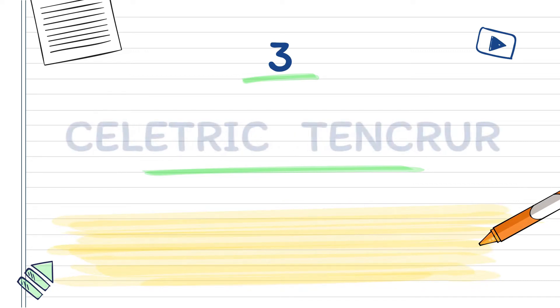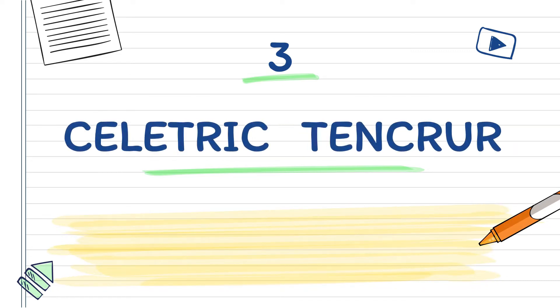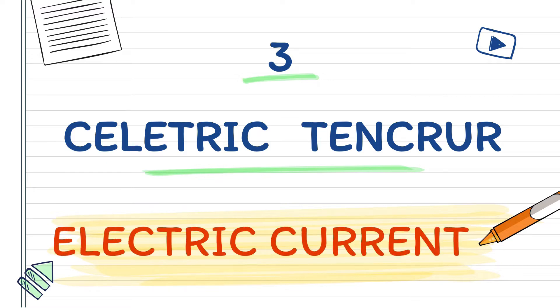Let's try another one. Arrange the scrambled letters to form a word. What is the word? Very good! It's electric current. Do you still remember those words? Those are the three basic electrical quantities. I'm glad that you still remember those terms. You are now ready to move on to the next lesson.